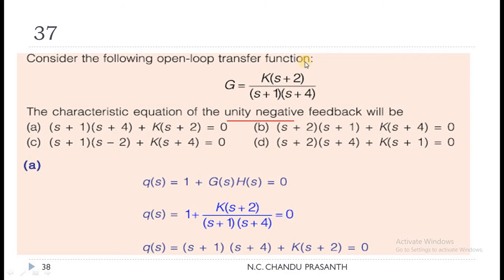Question 37: Consider the open loop transfer function G(S) = K(S+2) / [(S+1)(S+4)]. We have to find the characteristic equation of a unity negative feedback system. Setting 1 + G(S)·H(S) = 0 with H=1: 1 + K(S+2)/[(S+1)(S+4)] = 0. The characteristic equation is (S+1)(S+4) + K(S+2) = 0.